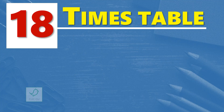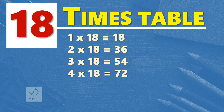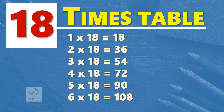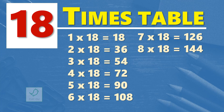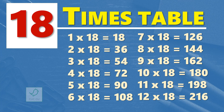18 times table. 1 times 18 is 18. 2 times 18 are 36. 3 times 18 are 54. 4 times 18 are 72. 5 times 18 are 90. 6 times 18 are 108. 7 times 18 are 126. 8 times 18 are 144. 9 times 18 are 162. 10 times 18 are 180. 11 times 18 are 198. 12 times 18 are 216. One more time.